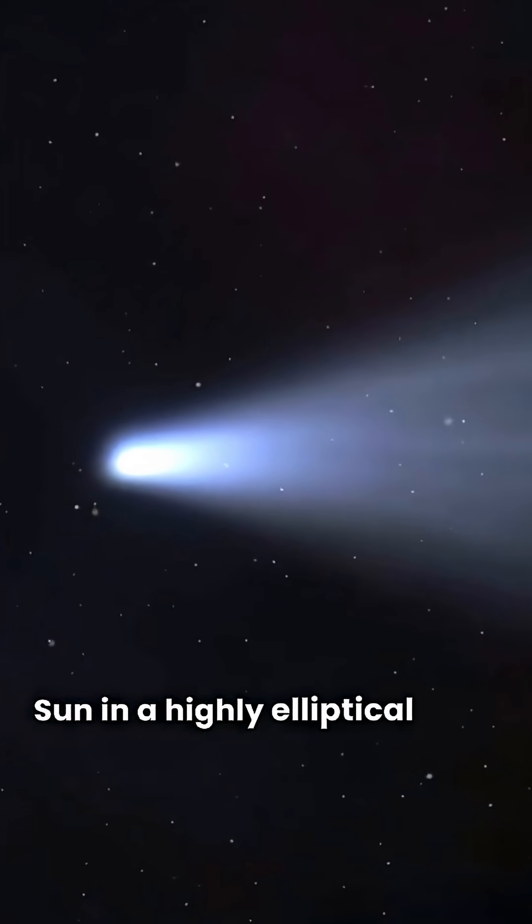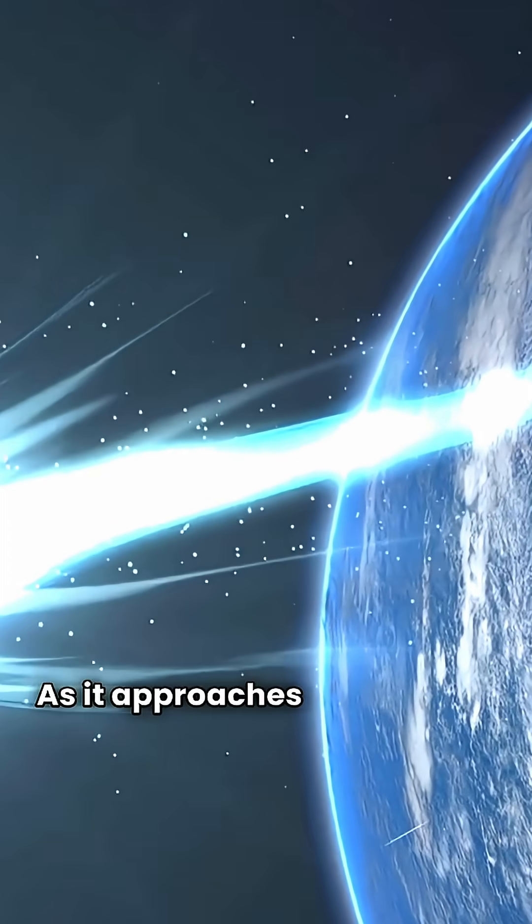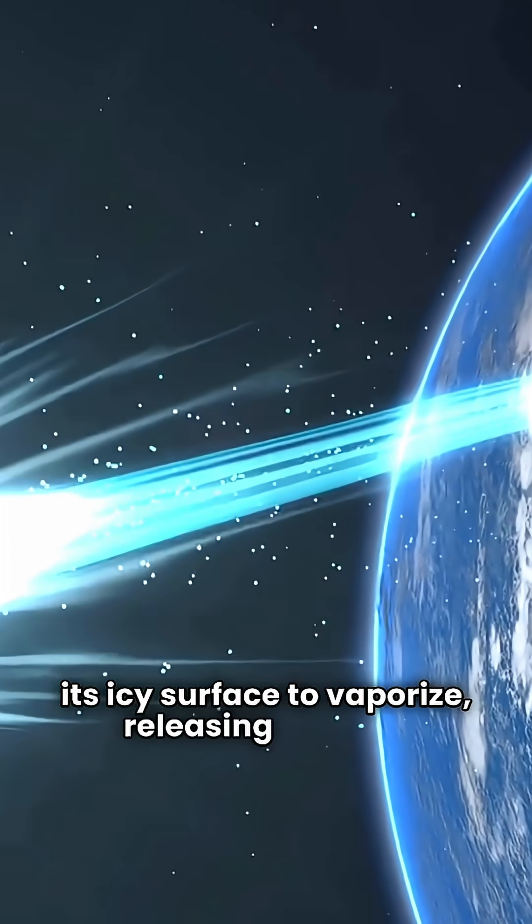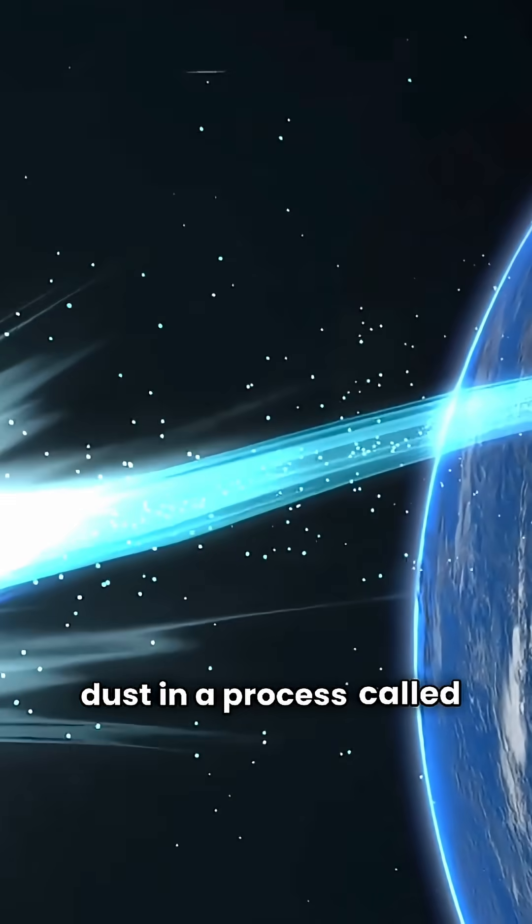orbiting the sun in a highly elliptical path. As it approaches the sun, the heat causes its icy surface to vaporize, releasing gas and dust in a process called outgassing.